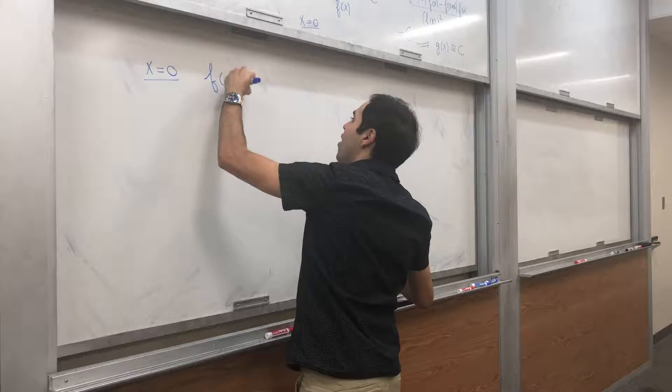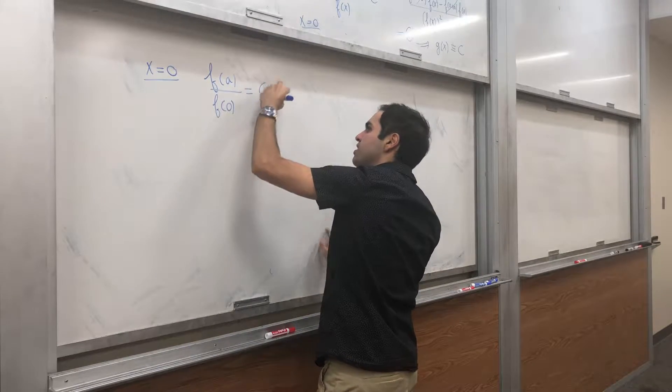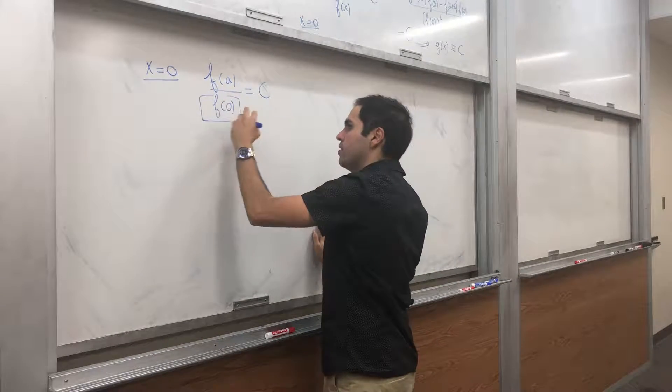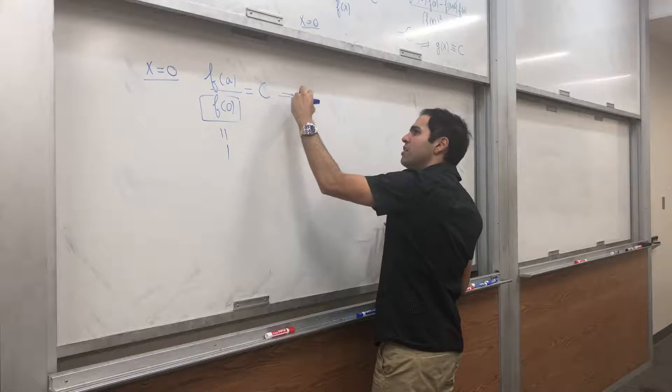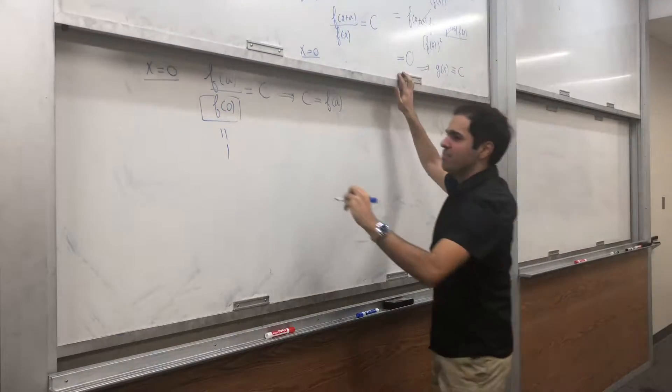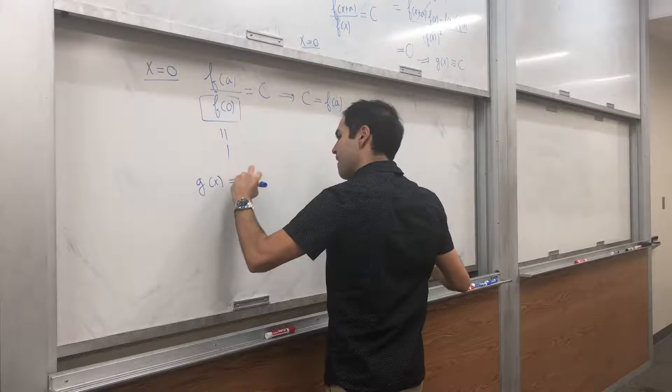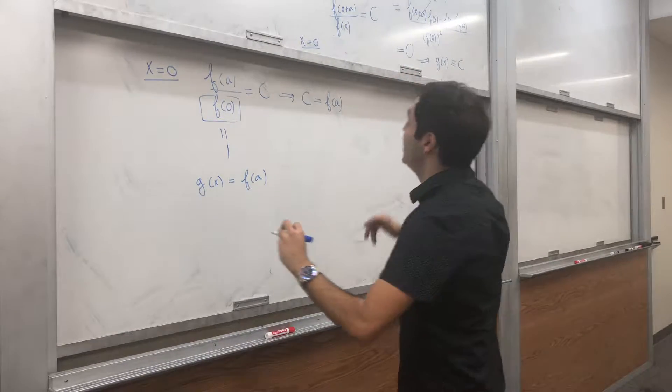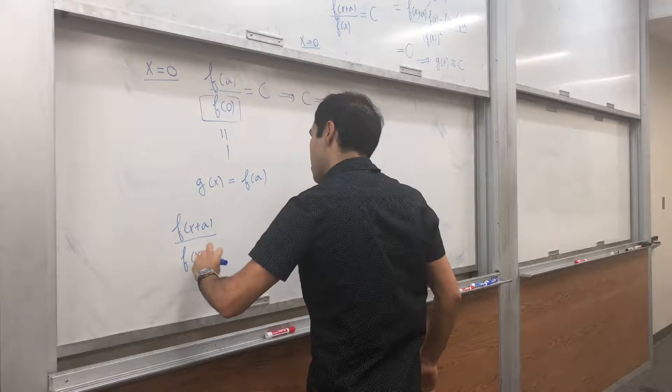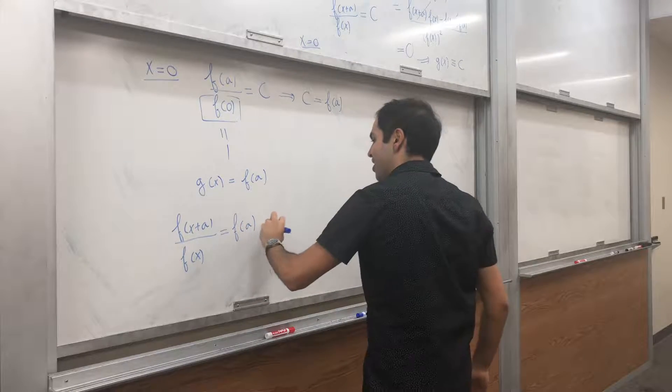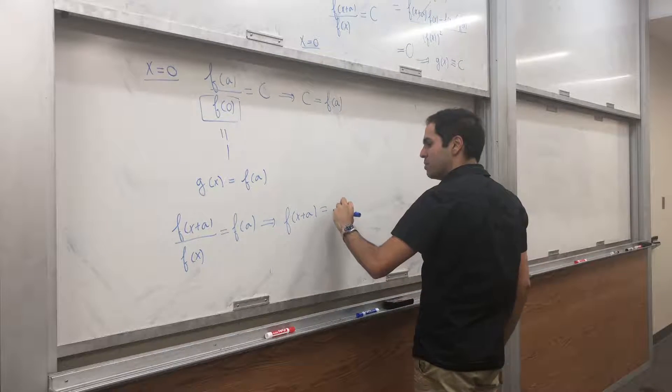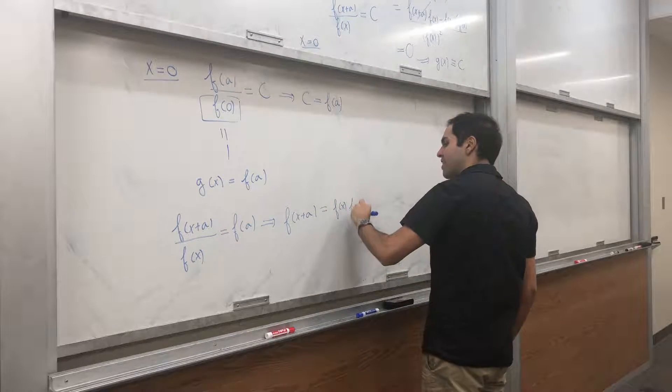In particular, g of x becomes f of a, but what was g? It was f of x plus a over f of x equals f of a. And lo and behold, this function, the exponential function, satisfies f of x plus a equals to f of x times f of a.